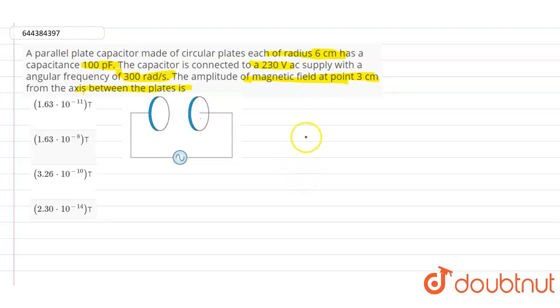From the given question, we have the given data: radius of the two parallel circular plates is 6 centimeters, the supply is connected to 230 volts AC, and the capacitance value is 100 picofarads.